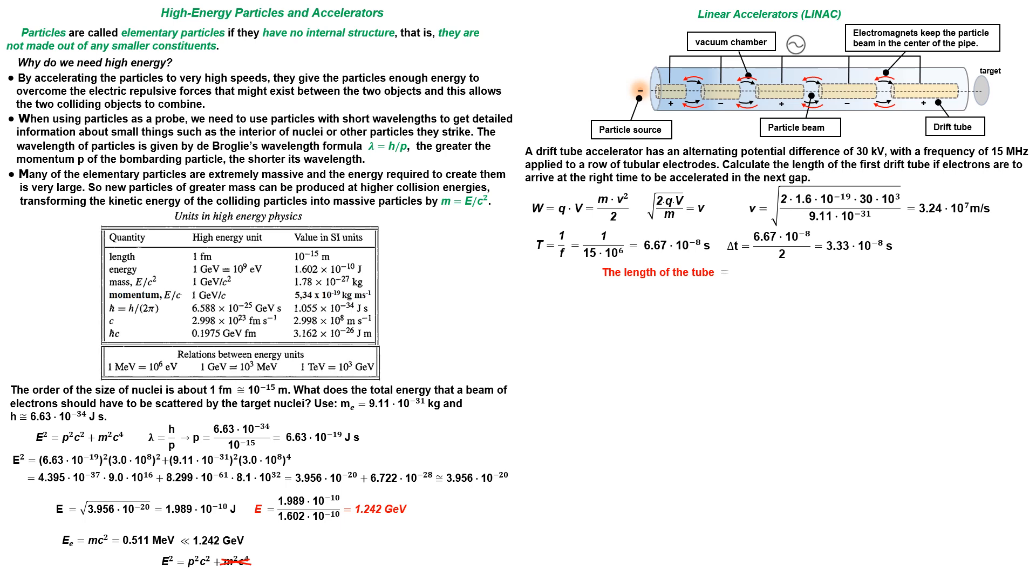As the electrons enter a drift tube, they travel with a constant velocity. So to calculate the length of the drift tube we multiply the time that a particle is in the drift tube by velocity.